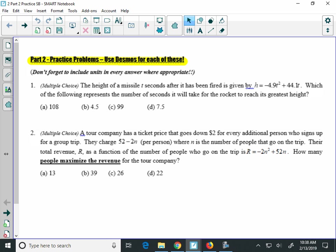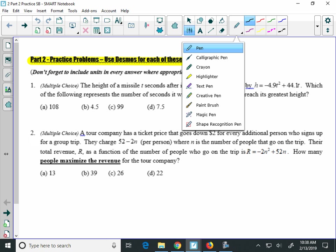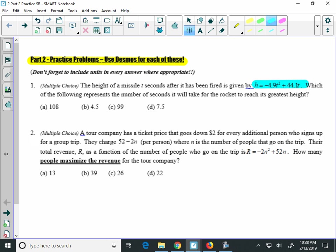The first one says the height of a missile after it's been fired is given by this following equation. So we want to know which of the following represents the number of seconds it will take for the rocket to reach its greatest height. Now, when you're asked to find the greatest height of something, that means you're trying to find the maximum. So we're going to type this equation into Desmos and find the vertex, the maximum, and then figure out which number is the number of seconds.